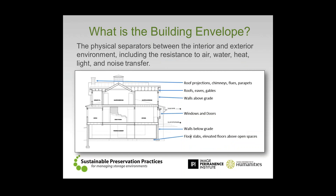What is the building envelope? Really, it's that outer skin — the physical separation between the interior environment and the exterior environment. In any circumstance, whether historic or modern structures, this creates the buffer and resistance to air conditions, moisture moving from one side to the other, heat energy coming through, light, and noise. The envelope in any structure can take on many shapes and sizes: chimneys, roofs — flat or pitched — eaves, water drainage, and walls both above and below grade.